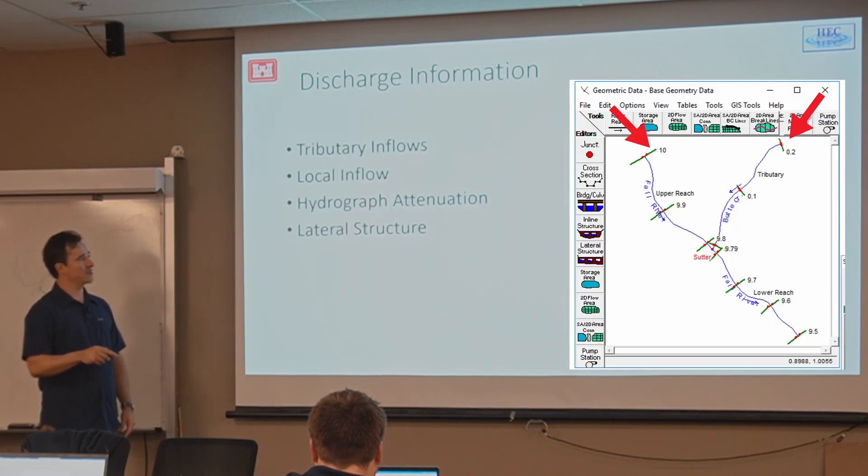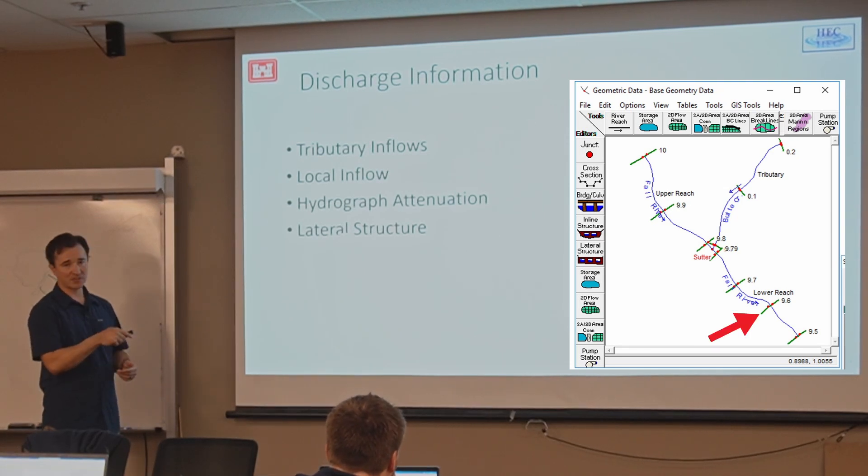Any external boundaries, including tributaries, those need to be specified. So if you have a tributary here, that also needs a boundary condition. However, at any cross-section, you can go in and specify local flows, inflows. So those could be due to like surface runoff or maybe a tributary that you don't want to model. You just want to have that flow come in. You could do that as well.